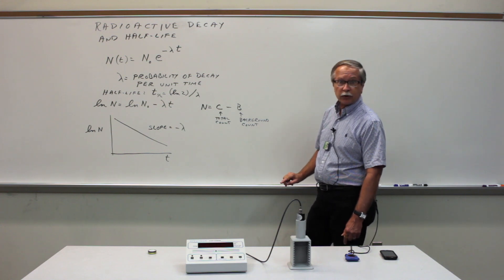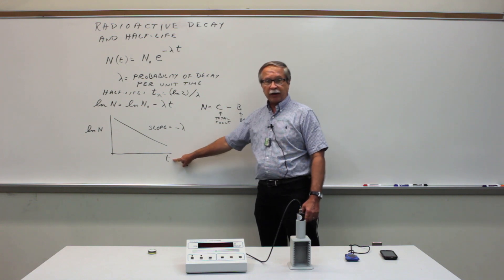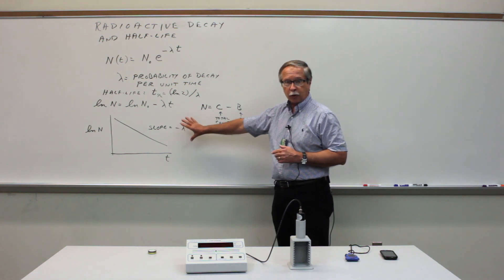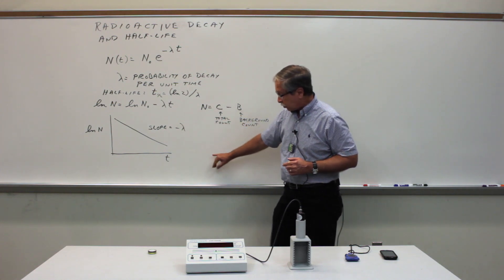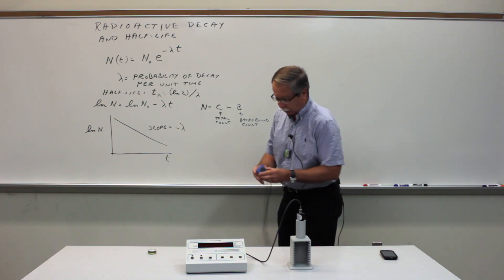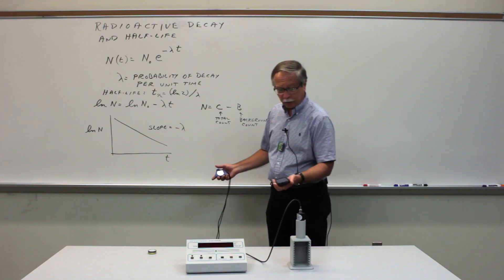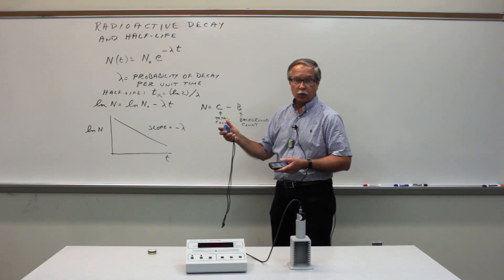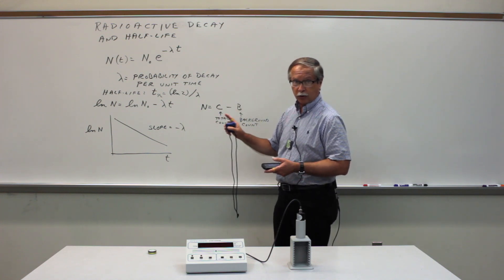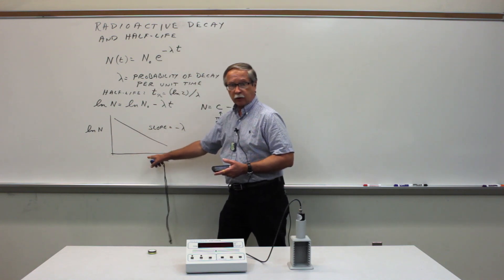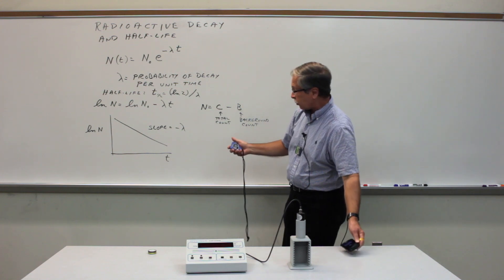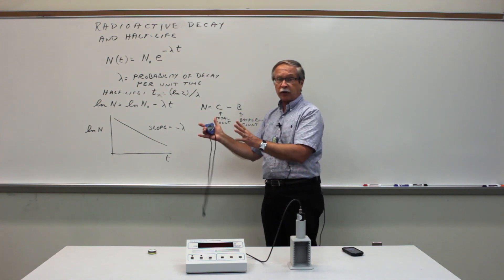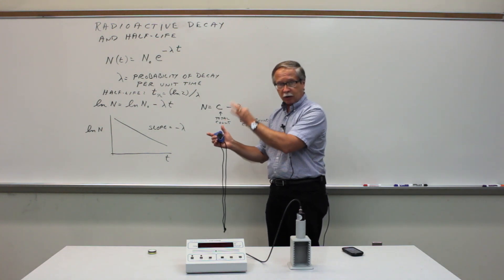Two essential pieces of information that you'll need. First of all you have to know exactly what the time is for each measurement. You'll need a stopwatch or many of you have smartphones and you can just use the stopwatch function on your smartphone. You need to have a timing device that will measure running clock time from the moment that you declare to be t equals 0. Start the stopwatch at the moment that you begin the first count and let the stopwatch run continuously through the entire lab period.